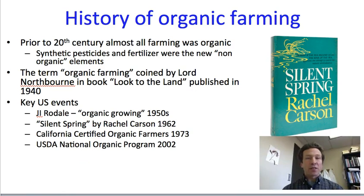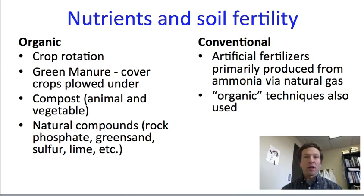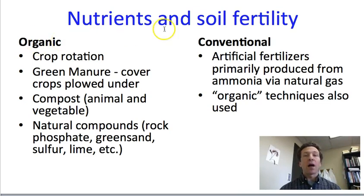Let's move on and compare approaches in organic farming to approaches in conventional farming. We'll start by looking at how organic and conventional systems manage nutrients in the soil, and hence soil fertility. On the left-hand column we have approaches used in organic agriculture; on the right, conventional approaches. In organic farming, nutrients are managed through several techniques.